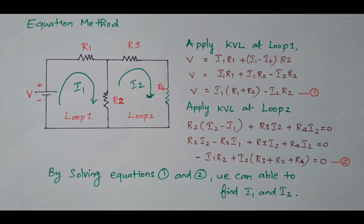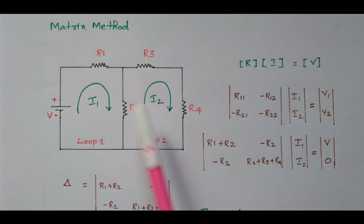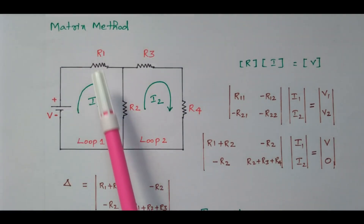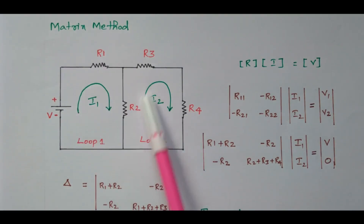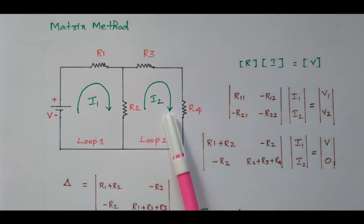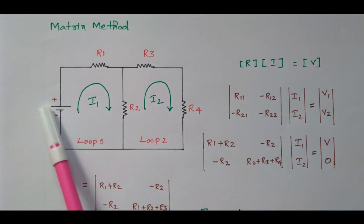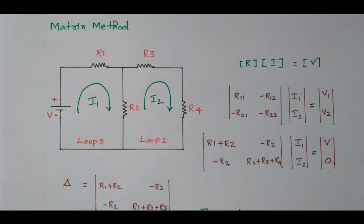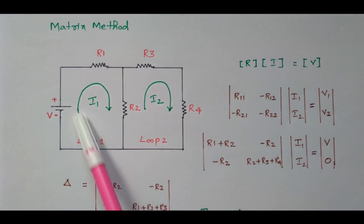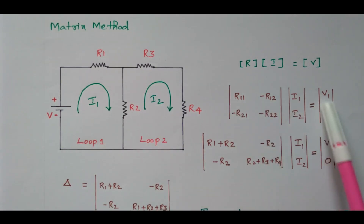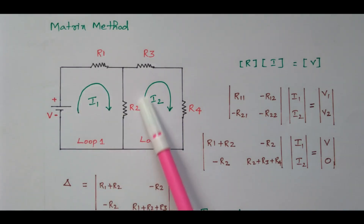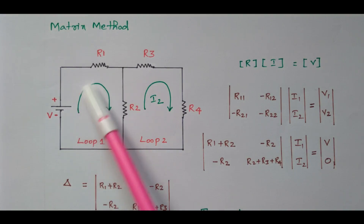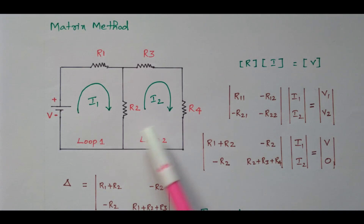Now we will see the same problem using the matrix method — how to frame the matrix for this problem. In the matrix method, the current assigned to each loop should be in a uniform direction. You should not assign currents in opposite directions. Both loops must have current flowing in the clockwise direction.